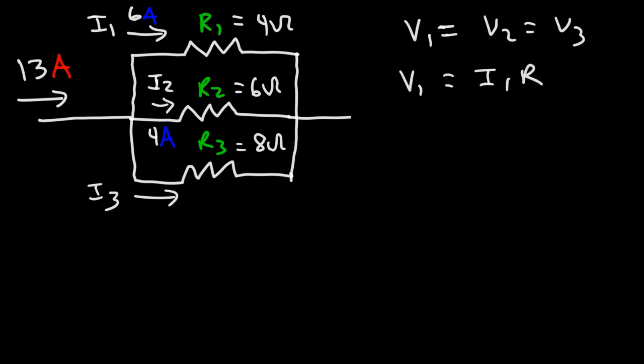So let's calculate V1. V1 is I1 times R1. It's the current that flows through R1, which is 6, times R1 itself, which is 4. So 6 times 4 is 24. Now that we have V1, we know what V2 is.